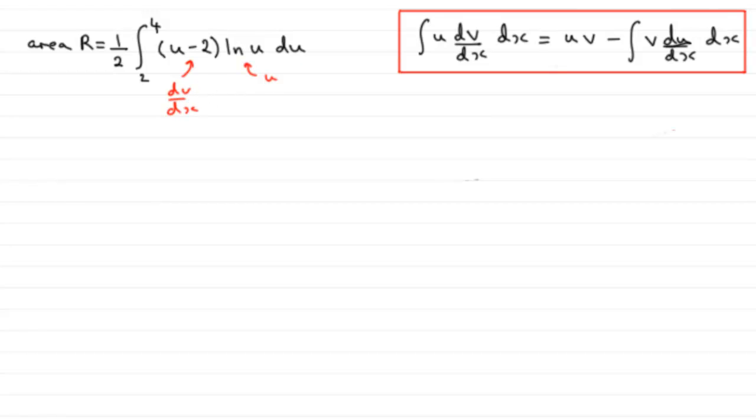So when it comes to integrating by parts then we've got that this is equal to a half. We can keep the half out the front. But we have got one part, the U part which is this bit, the natural log of U. Put that in brackets and it's multiplied by what is essentially the integral of the other part.